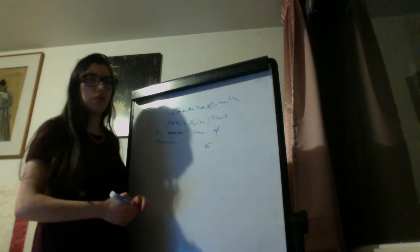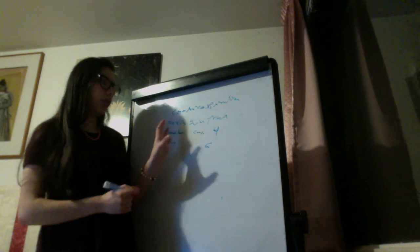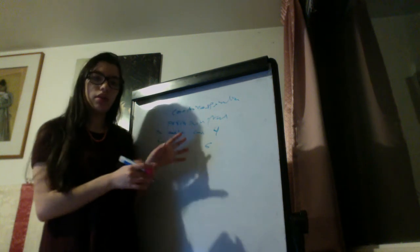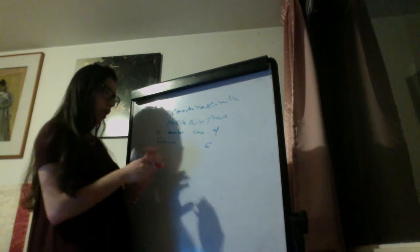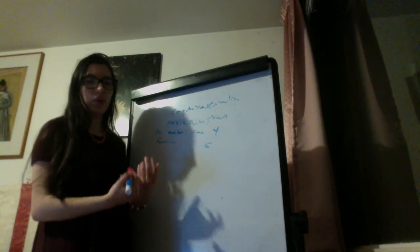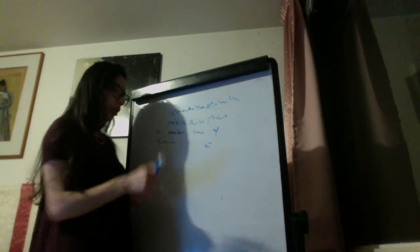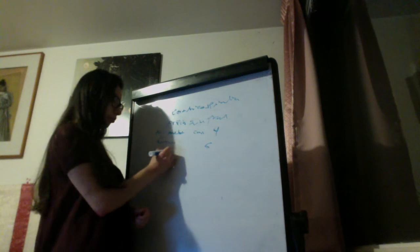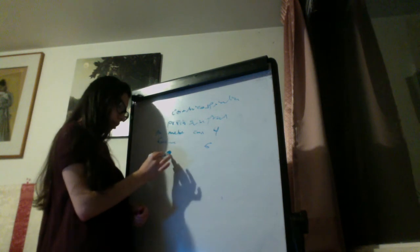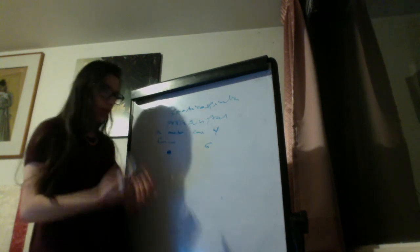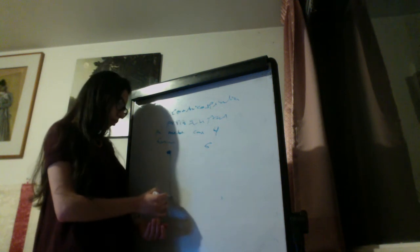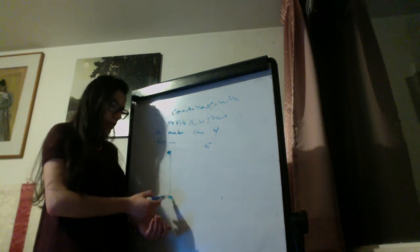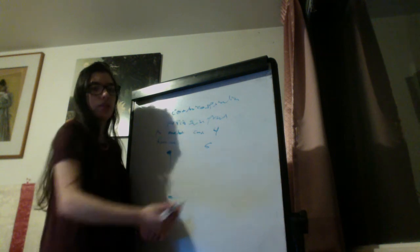We also have other important Brodmann areas in the frontal lobe, but here we will just focus on these. Let's remember the concept of upper and lower motor neuron. The upper motor neuron is on the cortex and will descend to the spinal cord, synapse on the lower motor neuron, and this lower motor neuron innervates the muscles.